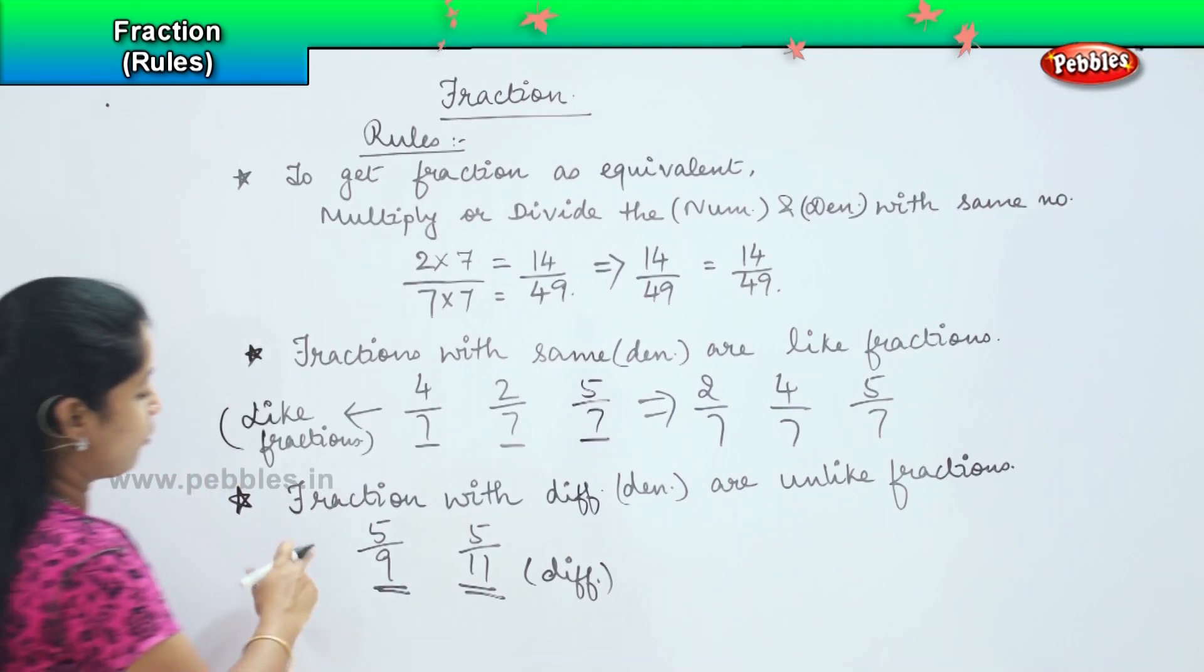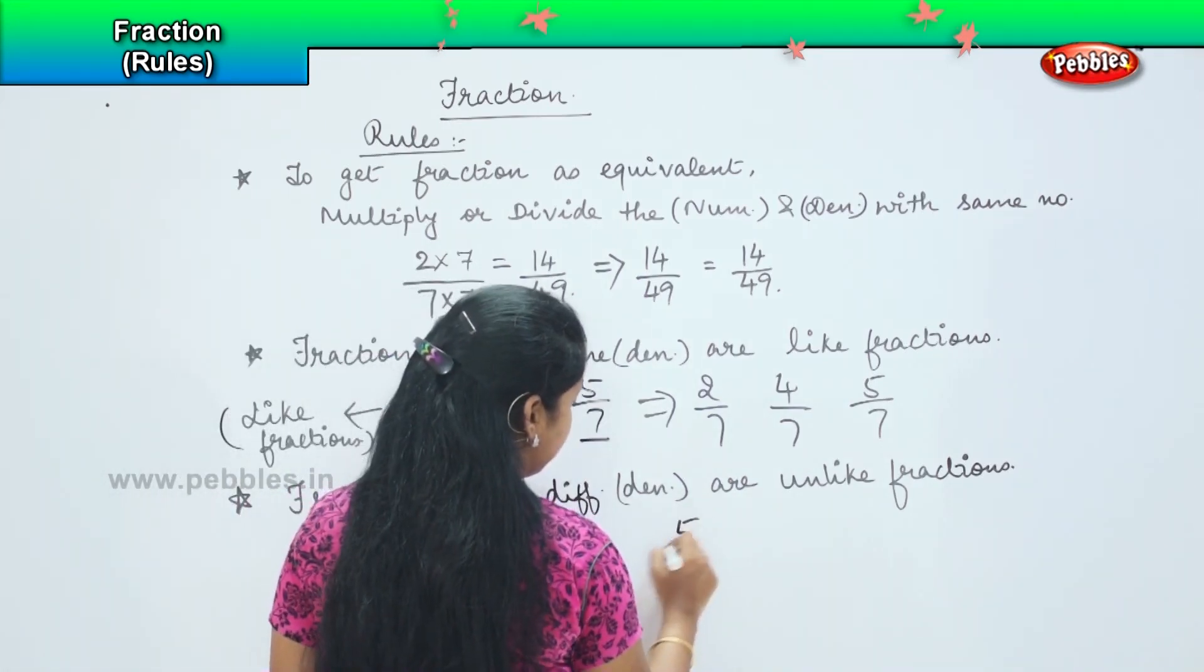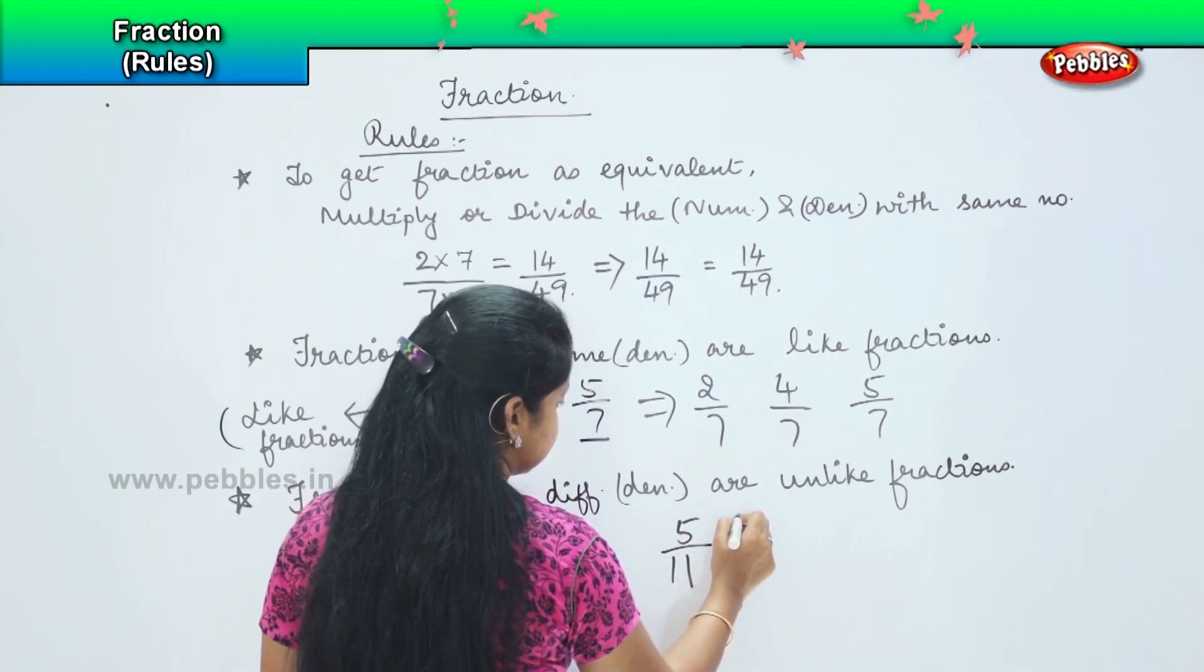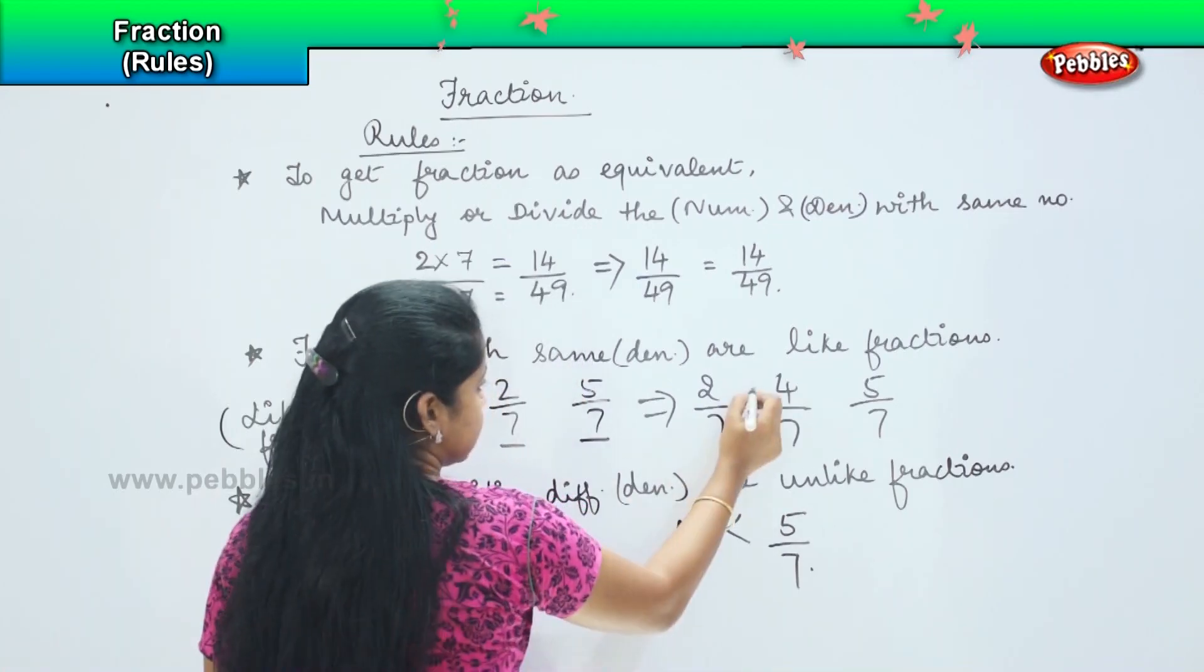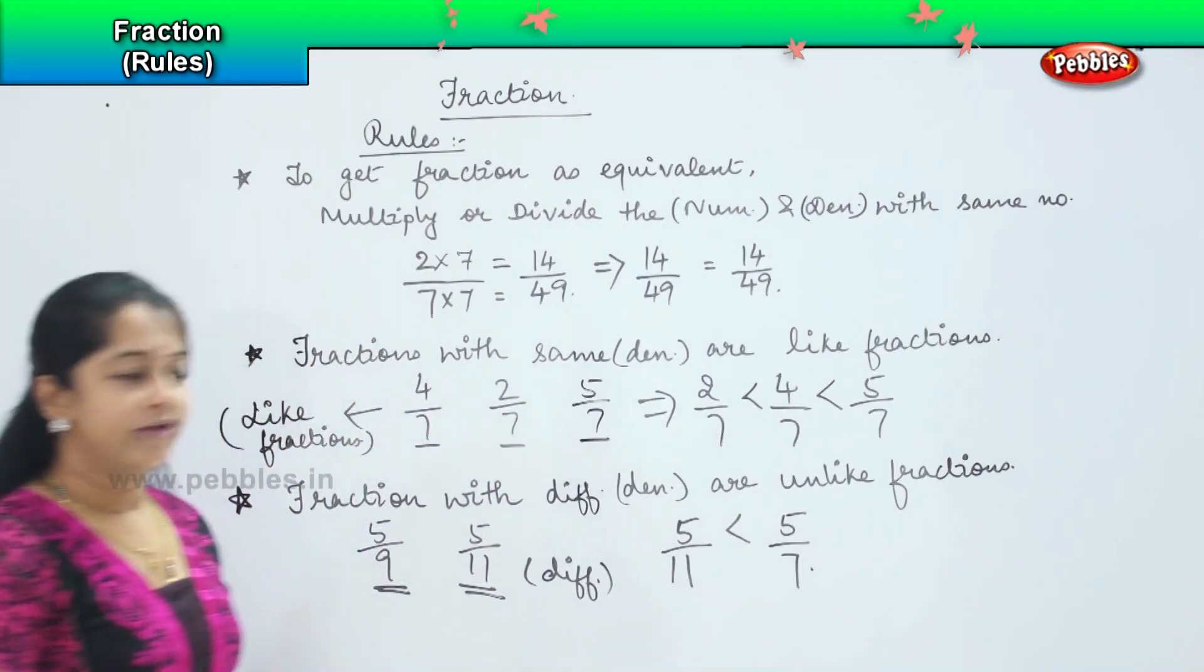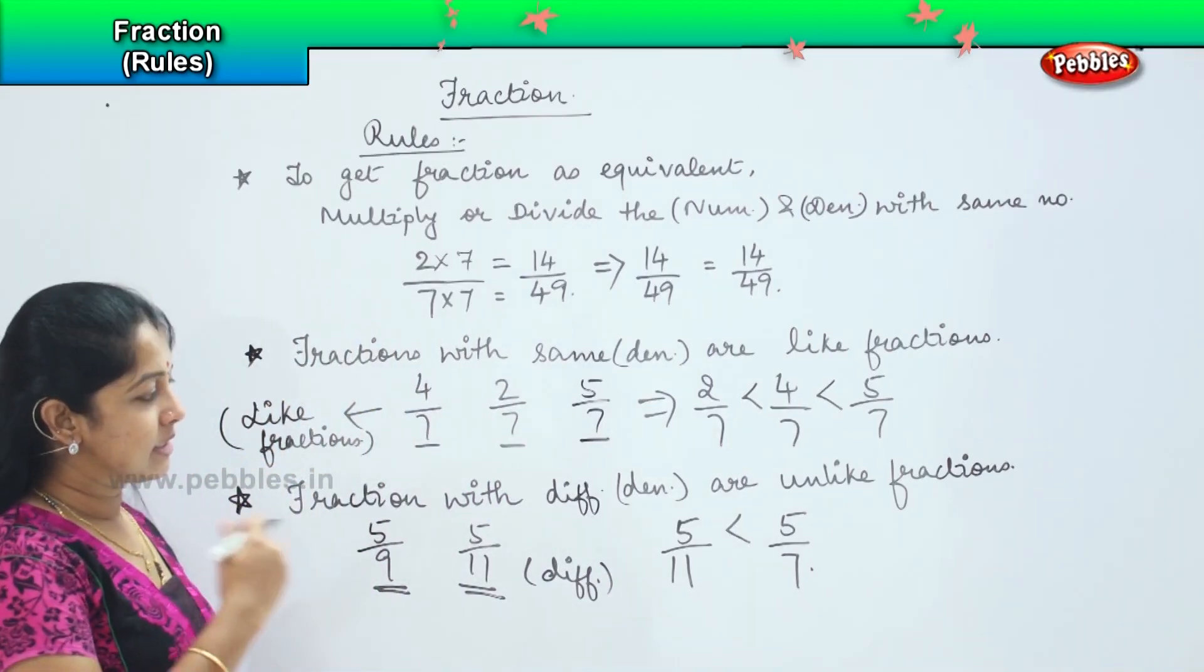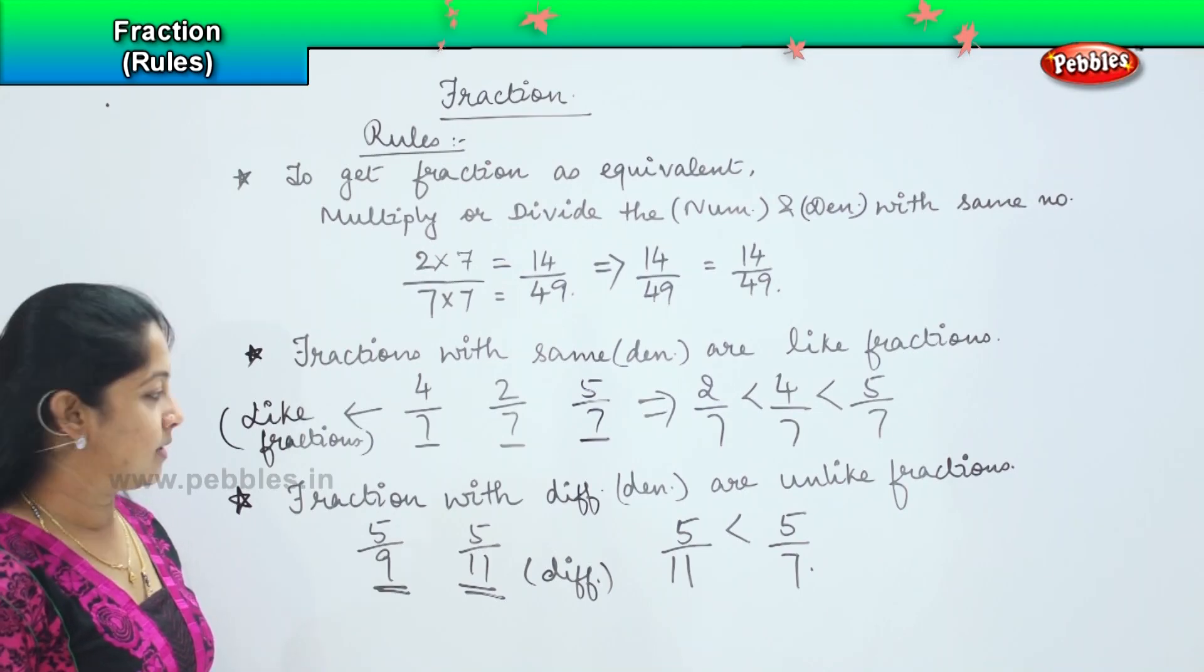So now if I have to arrange this in ascending order, I will write 5 by 11 is less than 5 by 7. In this case, 2 by 7 is less than 4 by 7 is less than 5 by 7. So this goes in the ascending order the way how we find for the whole numbers.